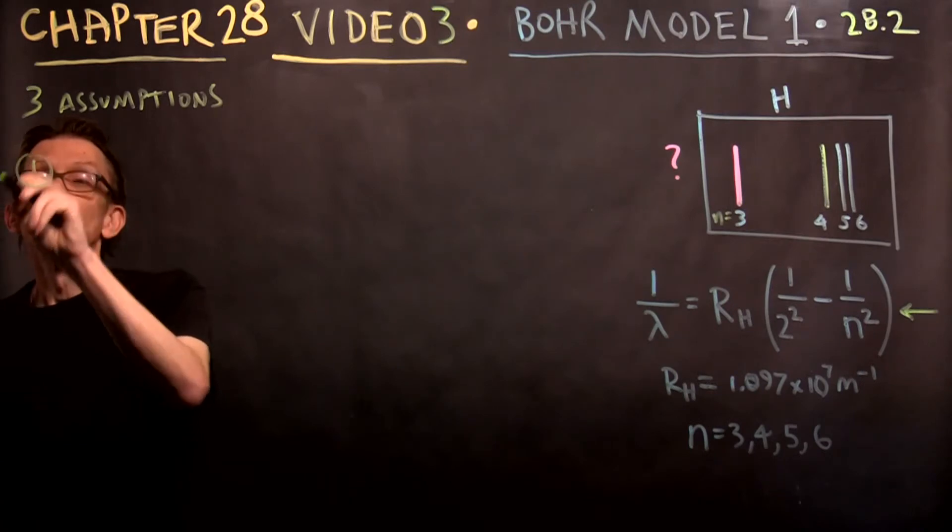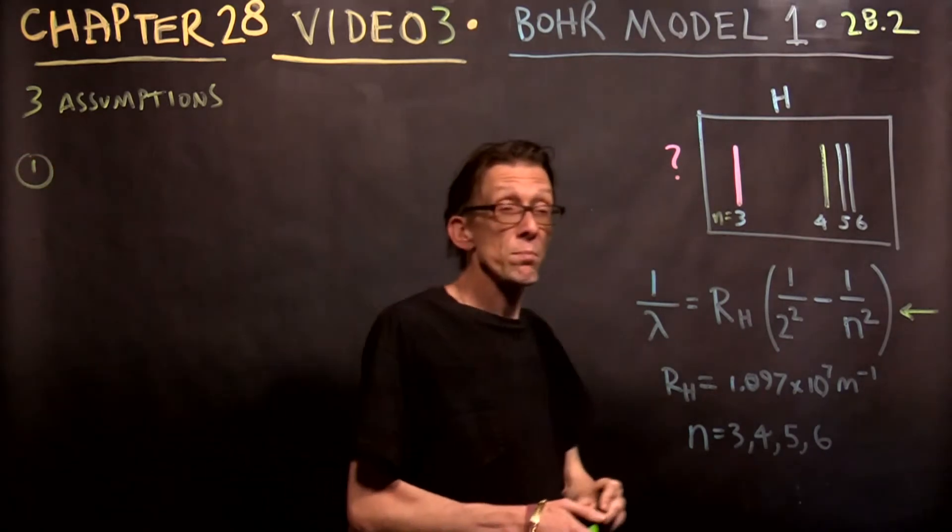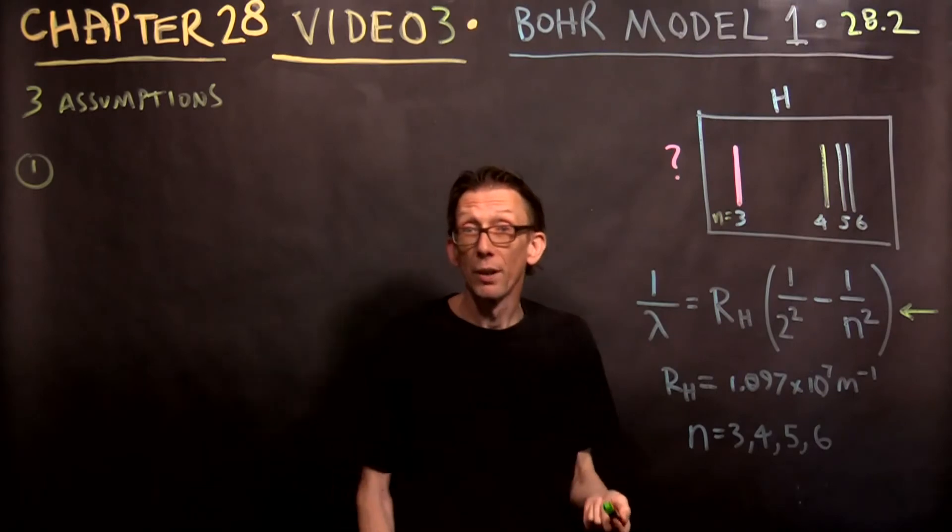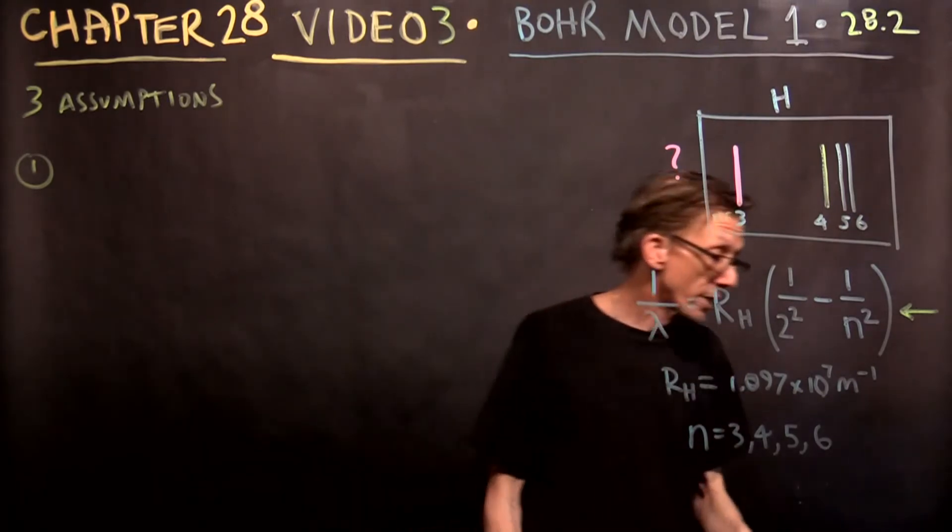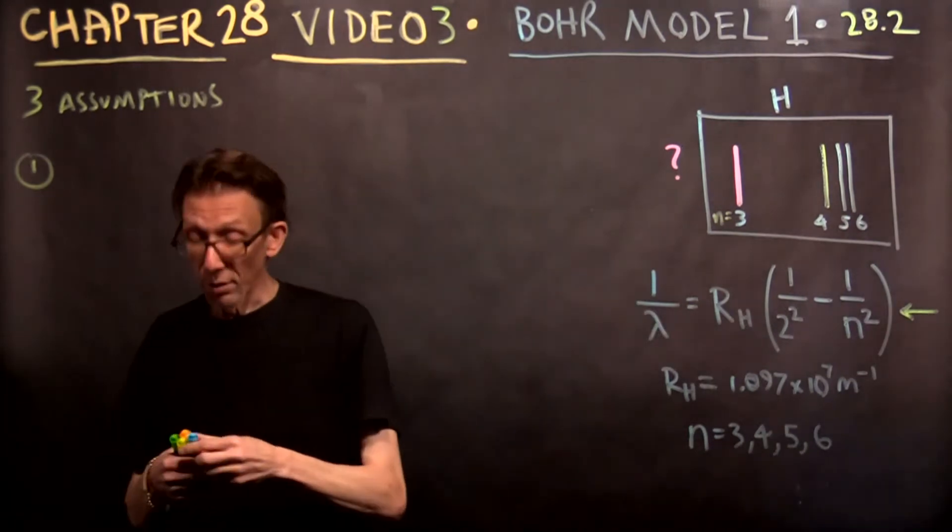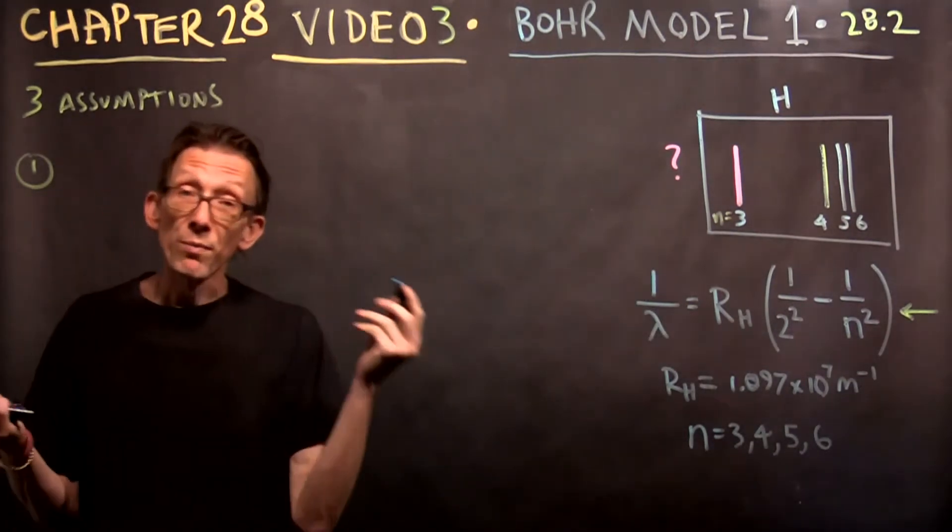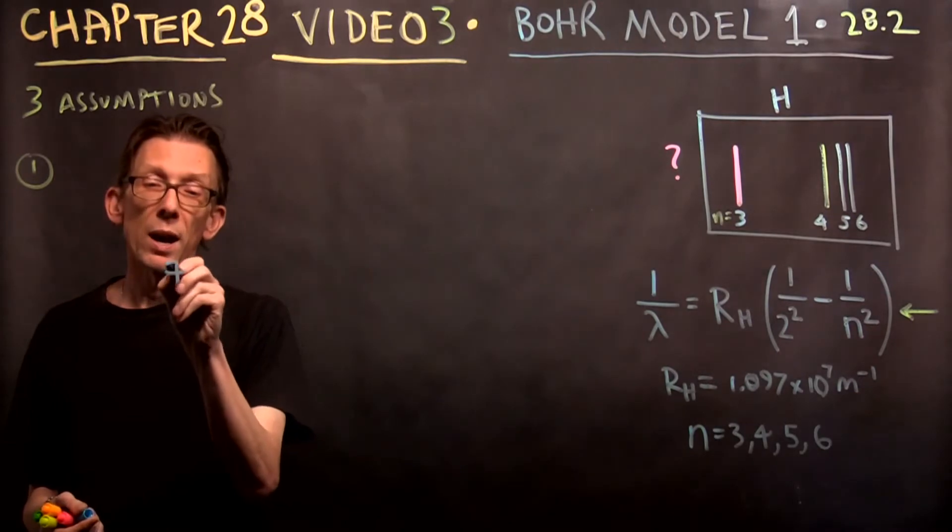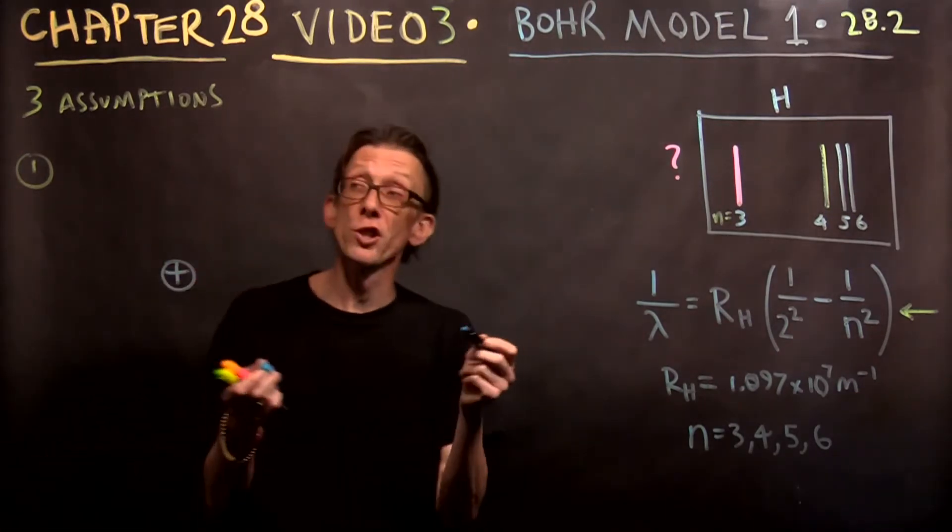Okay, the first one can be summarized in a picture. I'm not going to write words. I'm going to draw a picture. So the assumption was that the atom looks something like this. There was a positive nucleus. And remember, this is a hydrogen atom.